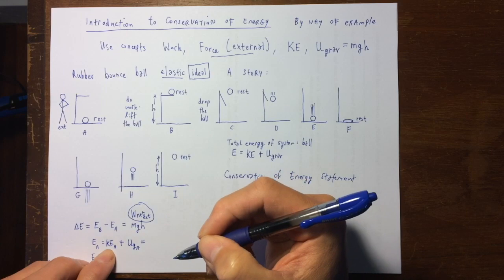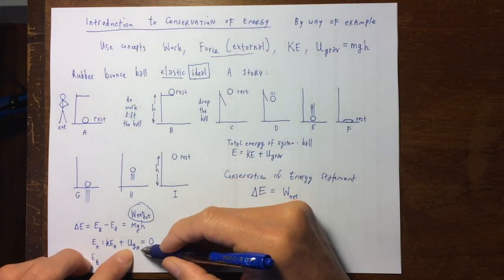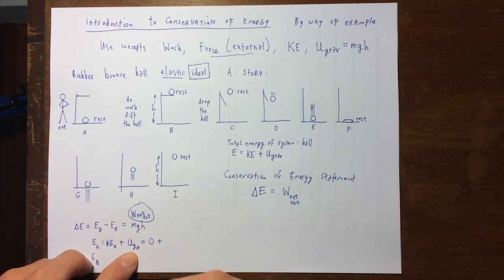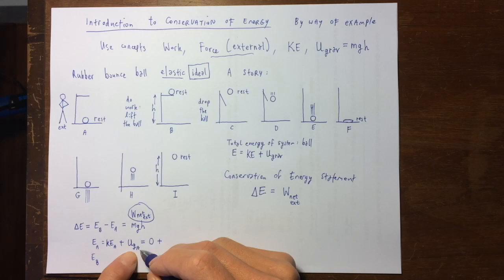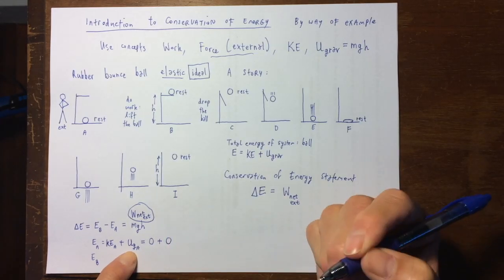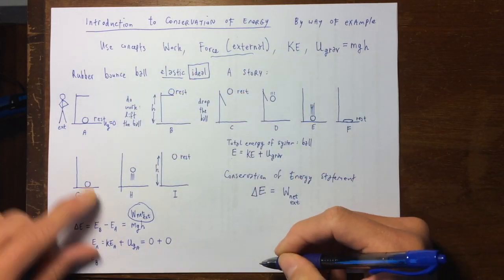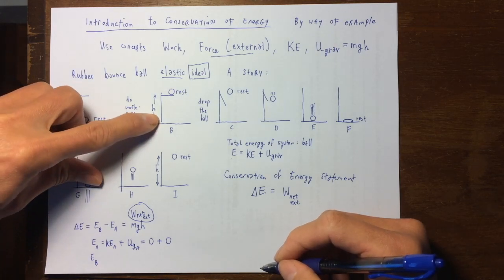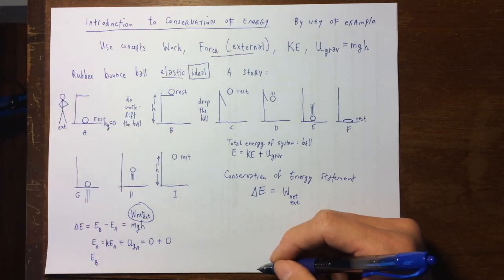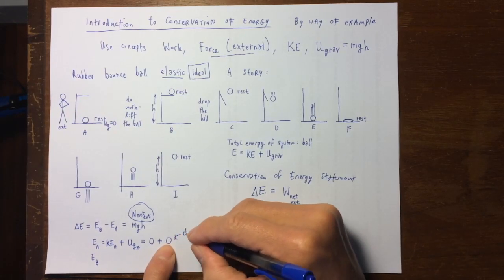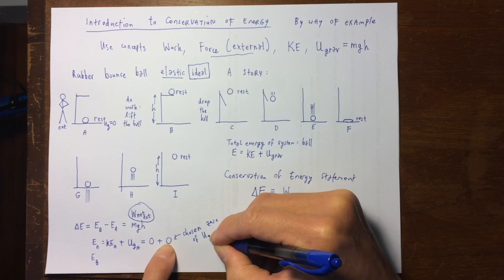The kinetic energy at A is zero because the ball is at rest. The gravitational potential energy at A — I'm going to choose the zero of gravitational potential energy to be at the tabletop. So gravitational potential energy is bigger if you're above it and negative if you're below it. This is what's called the zero of gravitational potential energy.